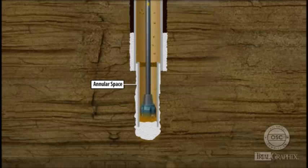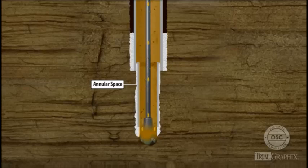To drill ahead, the rig crew uses a drill bit to drill through the cement in the bottom of the casing string and ahead into the formation below.